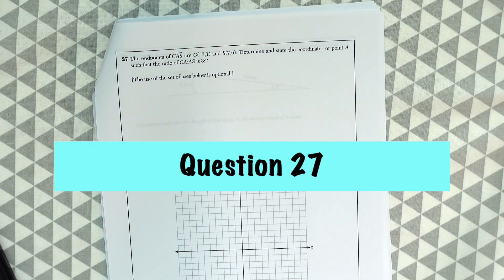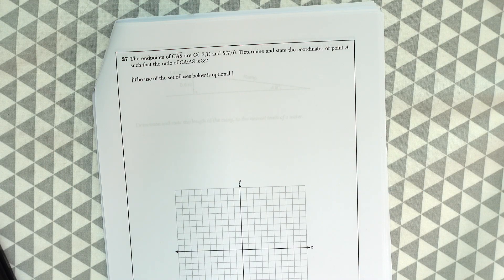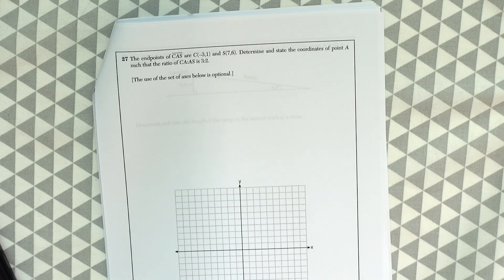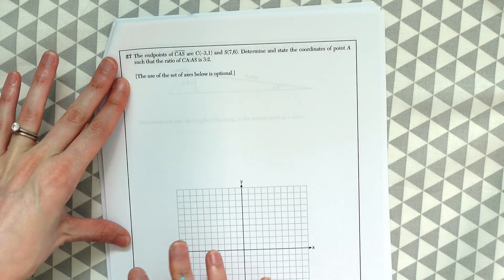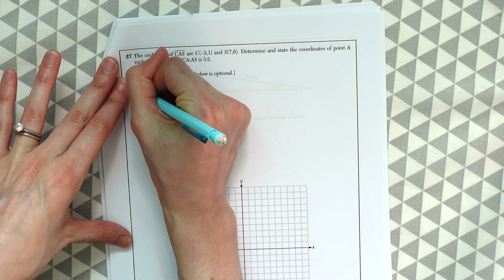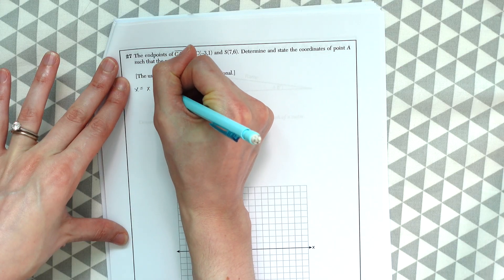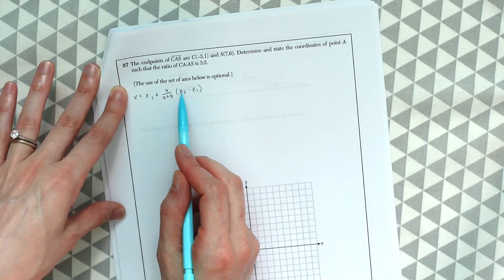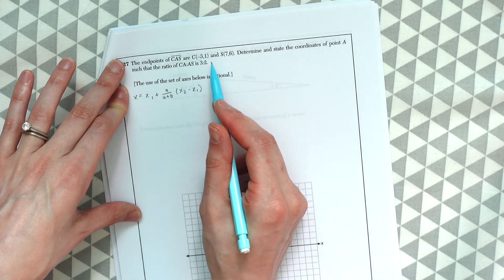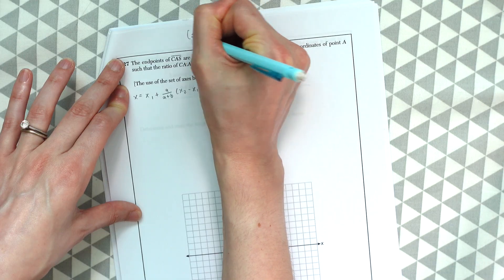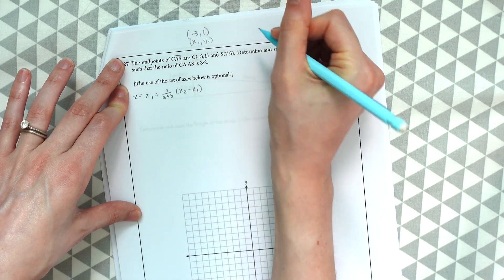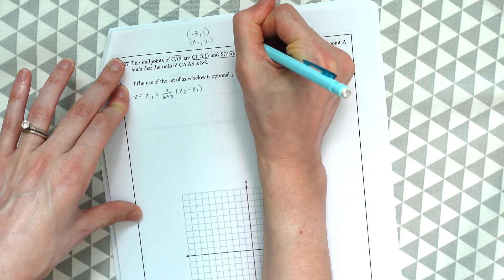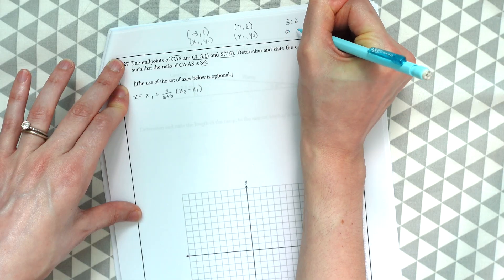Question 27. The endpoints of CAS are negative 3, 1 and 7, 6. Determine and state the coordinates of point A such that the ratio of CA to AS is 3 to 2. So here this is a nice easy question. We're going to be using a formula here. One to find the x coordinate and one to find the y coordinate and they're both very similar formulas. We have x is equal to x1 plus A over A plus B times x2 minus x1. So if you're wondering how do we fill this formula in, we're going to use all the information they gave us. So this negative 3, 1 is going to be our x1, y1. This 7, 6 will be our x2, y2 and then the ratio they gave us 3 to 2 is going to be our A and B.